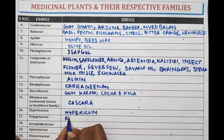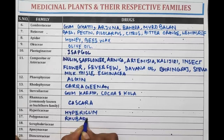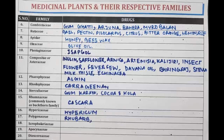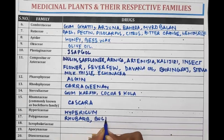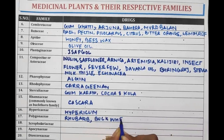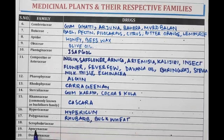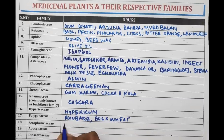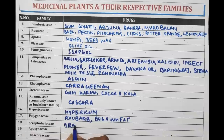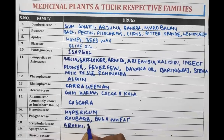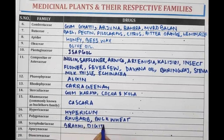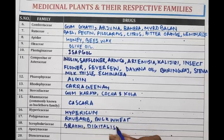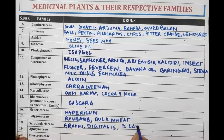Hypericaceae contains Hypericum. Polygonaceae contains Rhubarb. It has been asked a number of times what is the family of Rhubarb — the drugs belonging to Polygonaceae family are Rhubarb and Buckwheat. The next family is Scrophulariaceae; drugs belonging to it are Brahmi, Digitalis, Digitalis lanata, and Picrorhiza.